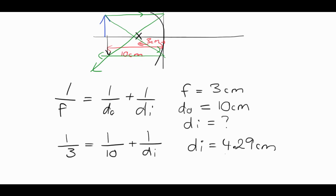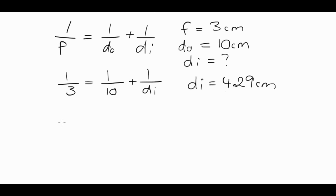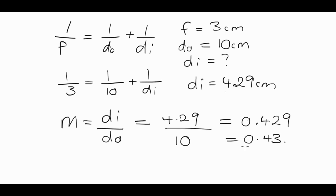From here we could then go away and work out the magnification of the image, and the magnification formula states that m is equal to image distance divided by object distance. So putting numbers into the equation, that would be 4.29 divided by 10, which will be equal to 0.429, or 0.43. Now, of course, magnification has got no units. It's just going to be meters divided by meters, using dimensional analysis, so they cancel out, you've got no units.